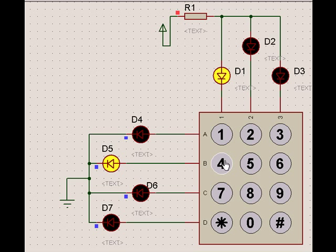7, 8, 9, and then the star, 0, and hash. So for each number pressed, there are two limbs which get connected.